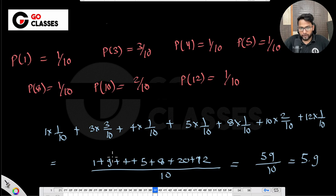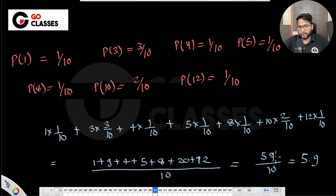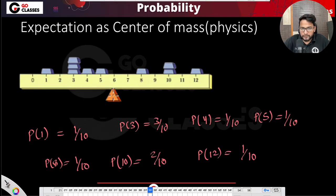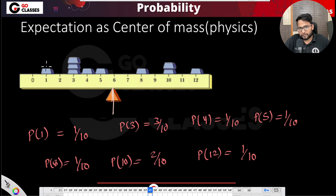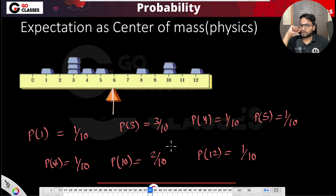So the expectation comes out to be 5.9. The PMF I wrote represents the weights in proportion — total 10 weights with probabilities 1/10, 3/10, 1/10, 1/10, 1/10, 2/10, and 1/10. The expectation 5.9 is nearly in between the values, in proportion to those weights. That's how you can also look at expectation — as a center of mass.